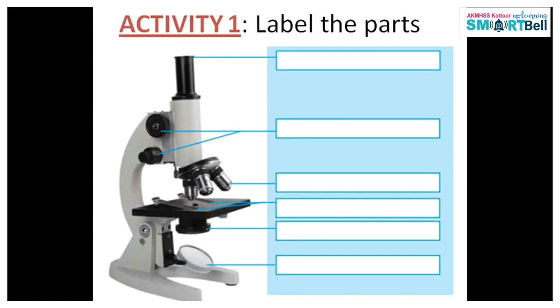Now we are going to do the first activity: label the different parts of the microscope. Please copy this picture into your notebook and label the different parts. Convex lens is present in a microscope, and this convex lens is present in the eyepiece, objective lens, and condenser.